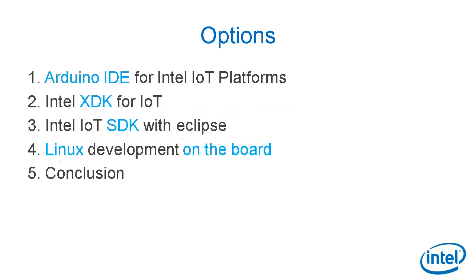To develop software for Intel Galileo and Intel Edison, we have four main methods. One, you can use the Arduino IDE, a special version from Intel. Two, you can use Intel XDK for IoT platforms. Three, you can use Intel IoT SDK with Eclipse development. And four, you can just access Galileo or Edison as a Linux platform and develop directly on the board with command line.